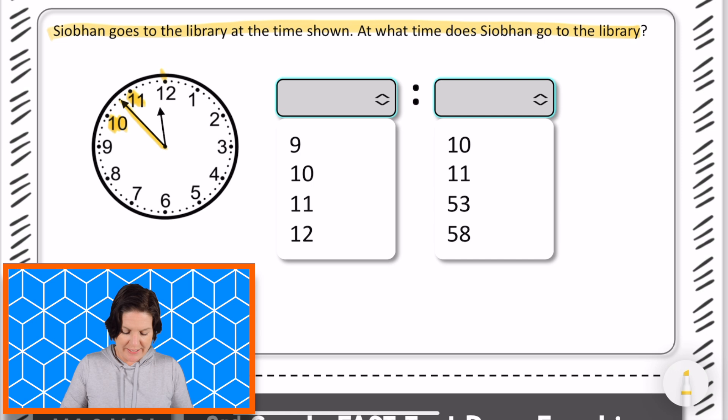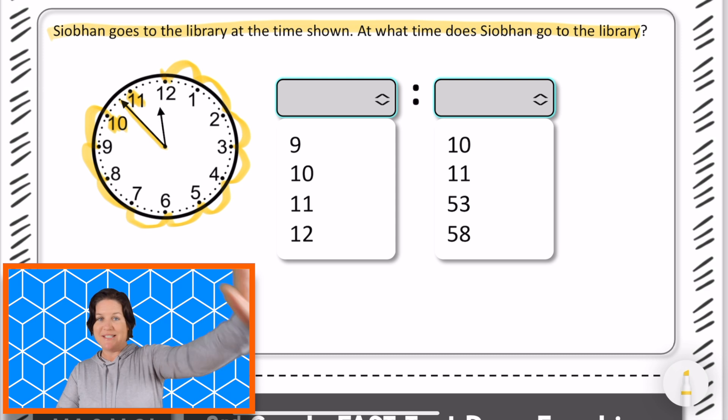So if I start at the 12 and I count by fives, I get 5, 10, count with me, 15, 20, 25, 30, 35, 40, 45, 50. Let me stop right there.